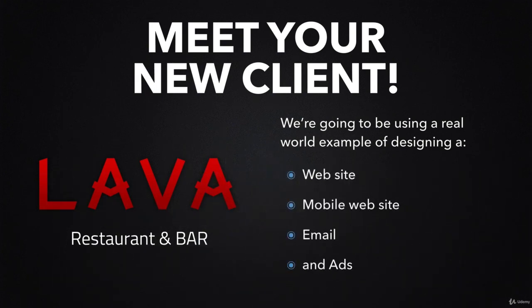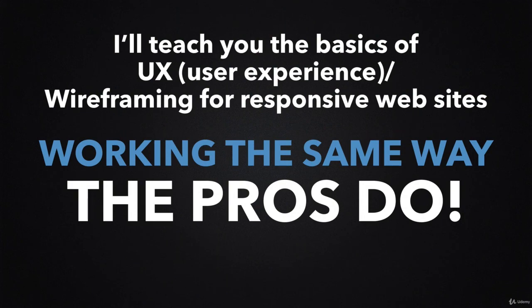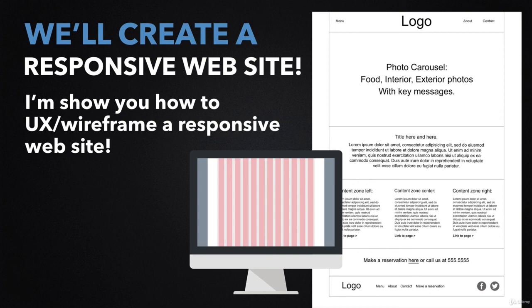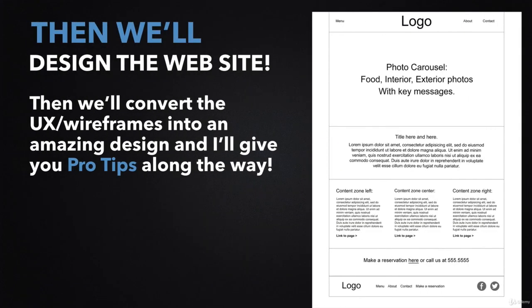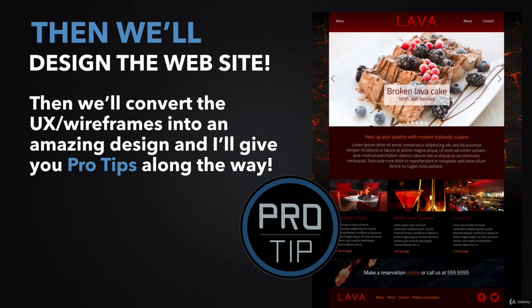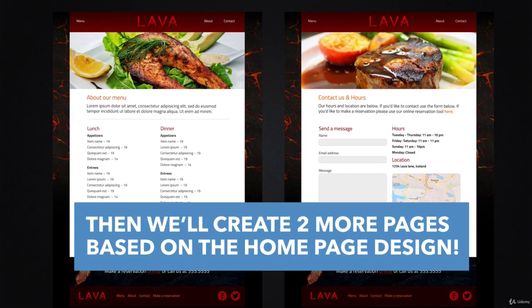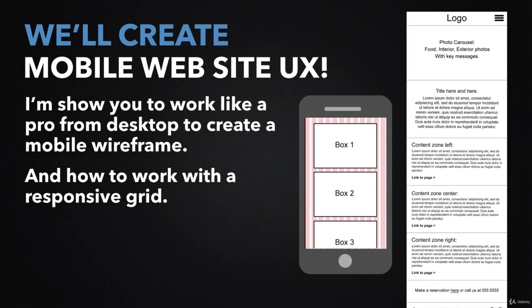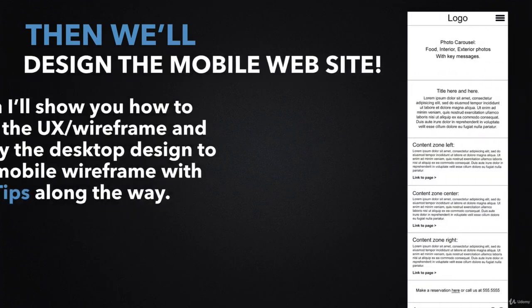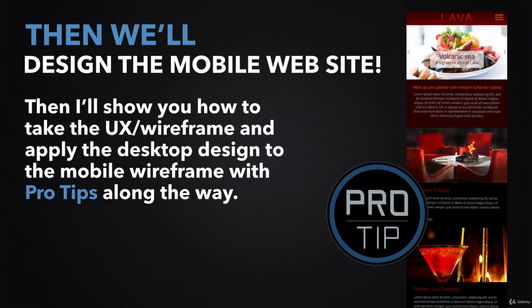We're going to use a real-world example of designing a website, a mobile website, email, and ads. I'll teach you the basics of UX, user experience, and wireframing for responsive websites, working the same way the pros do. We'll create a responsive website — I'll show you how to UX wireframe it, then design it by converting the UX wireframes into an amazing design, with pro tips along the way. Then we'll create two more pages based on the homepage design. Next, we'll create a mobile website UX, showing you how to work from desktop to create a mobile wireframe and work with a responsive grid. Then we'll design the mobile website, applying the desktop design to the mobile wireframe.